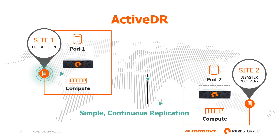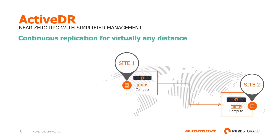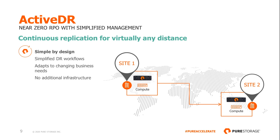ActiveDR is new in Purity 6 and provides simple and continuous replication that is designed for business resiliency. It's deployed between two FlashArrays within the same site or across multiple sites. A multi-site deployment safeguards businesses against site-wide disasters or outages by protecting the copy of data in a physically separate and potentially distant location. It's engineered to be simple and built with disaster recovery workflows in mind, and when needed, it's easy to adapt to changing business needs. There's no additional infrastructure needed.